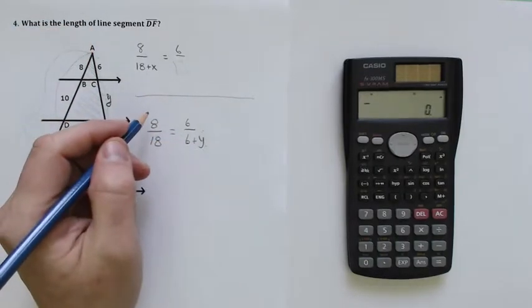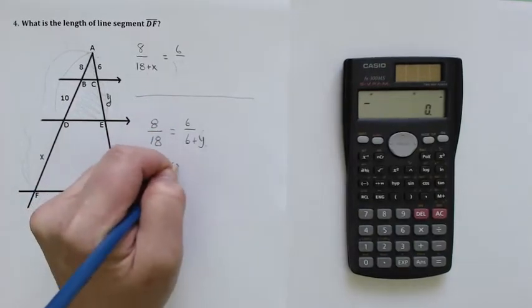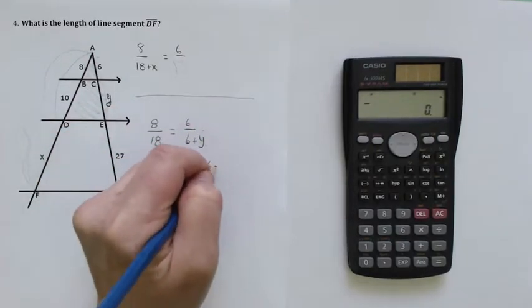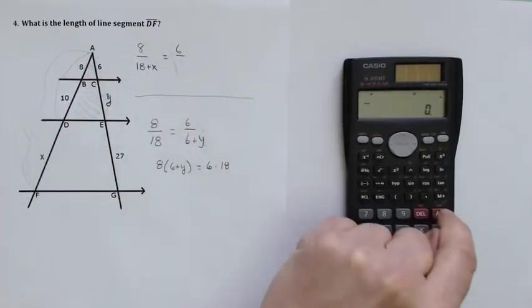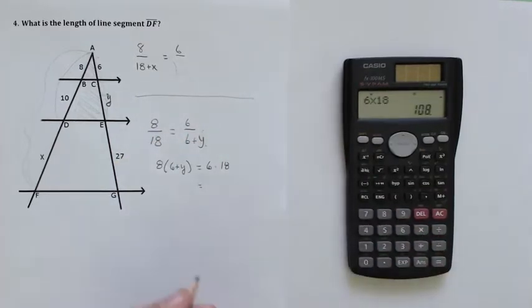Straight up cross multiplication now, so I'm going to go 8 times 6 plus Y. There's that distribution happening, is equal to 6 times 18. So I'm going to simplify, 6 times 18 is equal to 108.